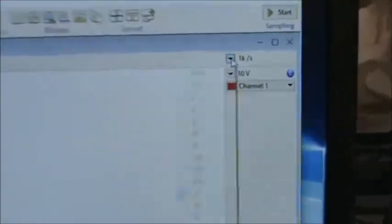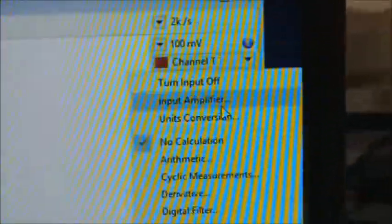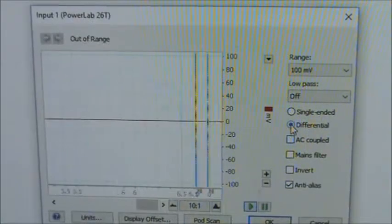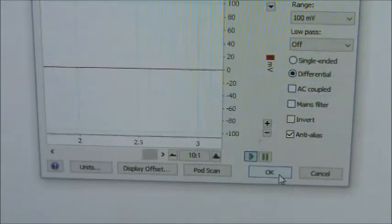Come over here, select 2K. Then change this to 100 millivolts. And then you're going to choose Input Amplifier. Now you're going to select Differential and you can leave that checked. So hit OK.